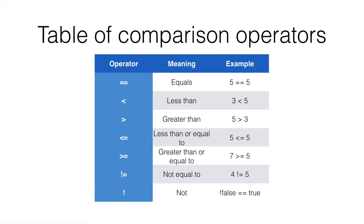The next operator is less than, which is just the crocodile clip facing to the left — I'm sure most of us are familiar with this. Greater than is the opposite one. Less than or equal to is the less than sign and an equal sign after that. 5 <= 5 evaluates to true, because although 5 is not less than 5, it is equal to 5. Greater than or equal to is the opposite crocodile clip plus the equal sign. So 7 >= 5 is true, because 7 is not equal to 5 but it is greater than 5. Not equal to is an exclamation mark followed by an equal sign. So 4 != 5 evaluates to true, because 4 is different than 5.